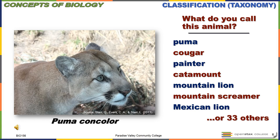Now let's talk about how science classifies living organisms. This is called taxonomy — it's just a classification system. As you can see in the picture, it's got a mountain lion, and to the right of the picture it says puma, cougar, painter, catamount, mountain lion, mountain screamer, Mexican lion — and apparently there are 33 other names for this one specific animal. That can get incredibly confusing, so over the years from the 1800s forward, we've come up with classification systems, and we'll talk about the current one.